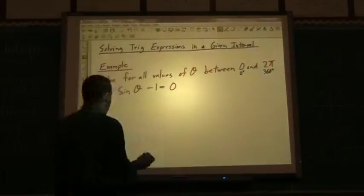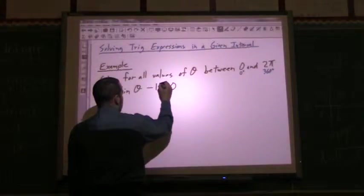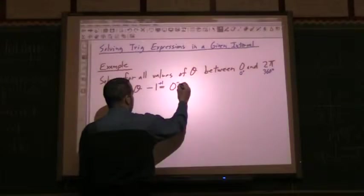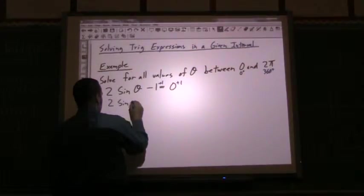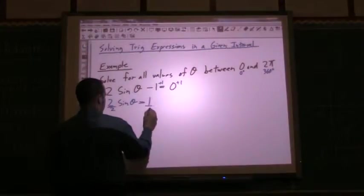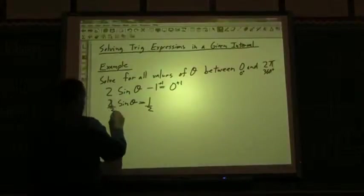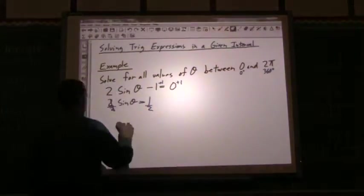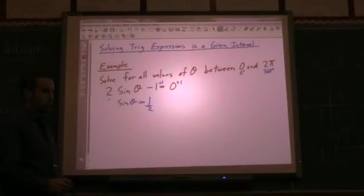So now let's solve our trig expression. I'm going to take the 1 to the other side, so plus 1, plus 1, so I have 2 sine theta equals 1. Divide both sides by 2, and I end up with sine theta equals 1 over 2. These cancel out, so sine theta equals a positive 1 over 2.